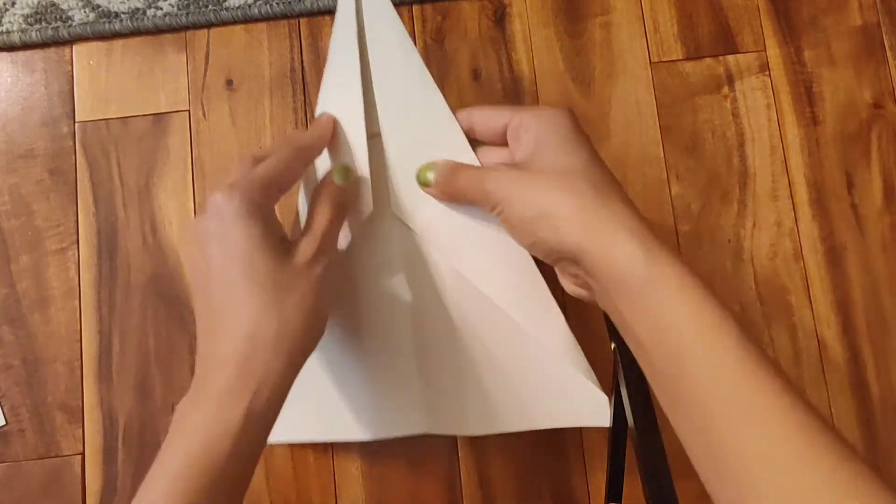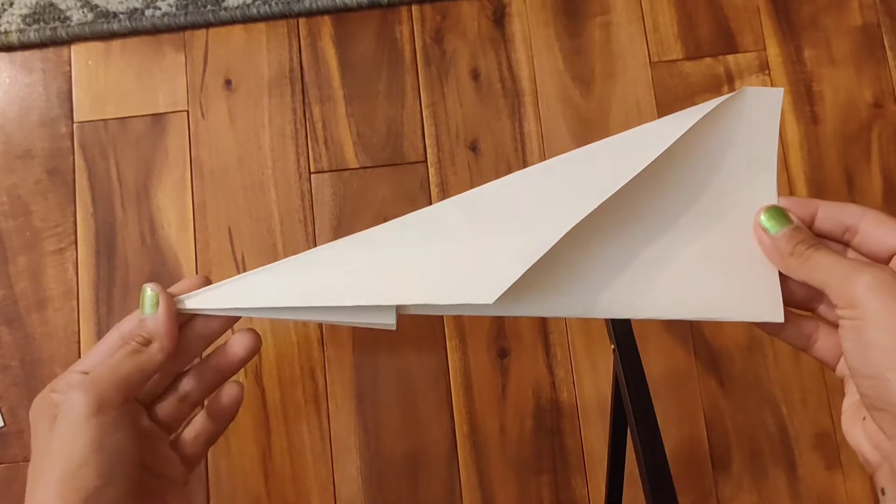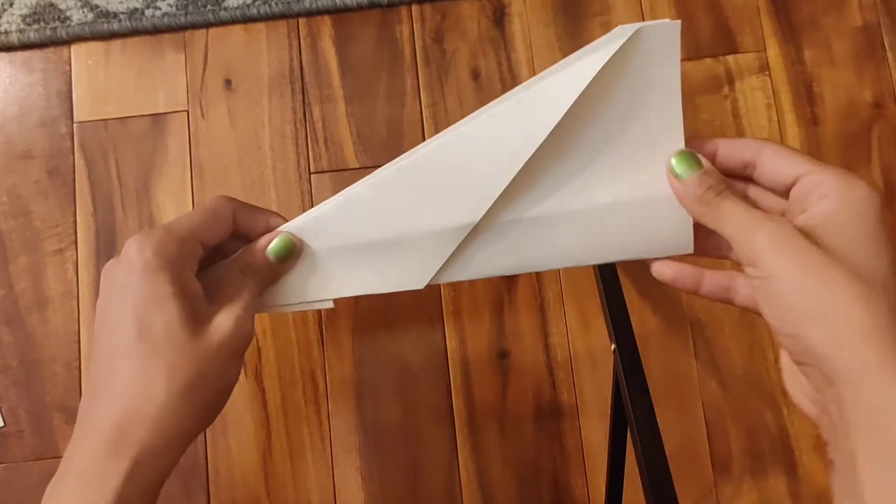And then once you're done there, you're going to flip it over. You're going to fold it in half so that you have this shape. Once you're here, you're going to make the wings.